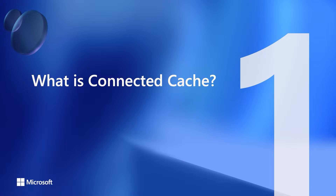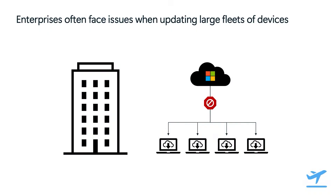So to start with, let's talk about what is Connected Cache. Connected Cache started as a response to a common issue that a lot of our enterprise customers face when updating large fleets of devices. You're an enterprise customer with lots of enterprise managed devices at a company site, all connected to the same network. Then Patch Tuesday rolls around and there's a big update that needs to go down to all of your enterprise managed devices.